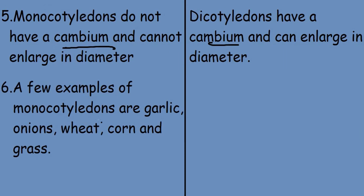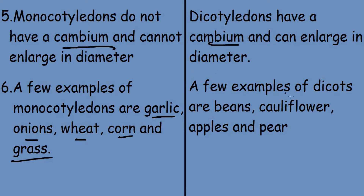A few examples of monocotyledons are garlic, onion, wheat, corn, and grass. A few examples of dicotyledons are beans, cauliflower, apples, and pear.